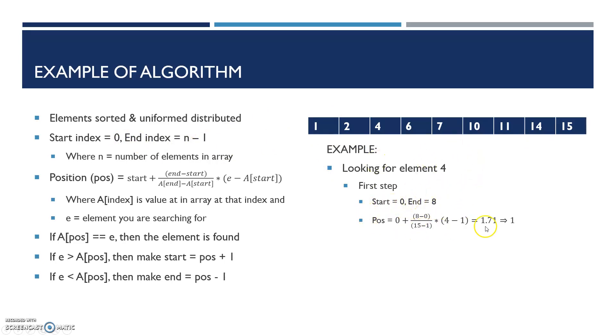We've plugged in values into our formula: start index 0, plus (8 minus 0) over (15 minus 1) times (4 minus 1). That equals 1.71, but for our algorithm, you take only the integer value because indexes can only have integer values.